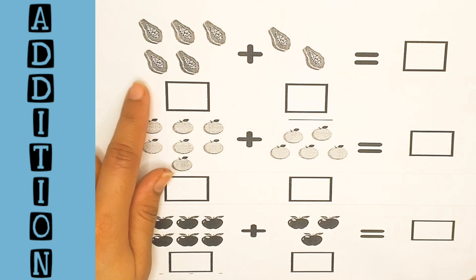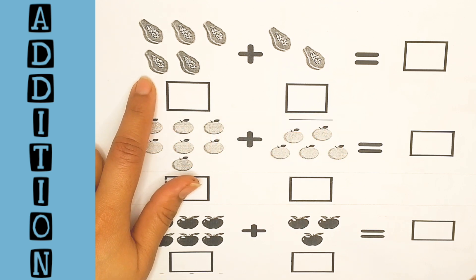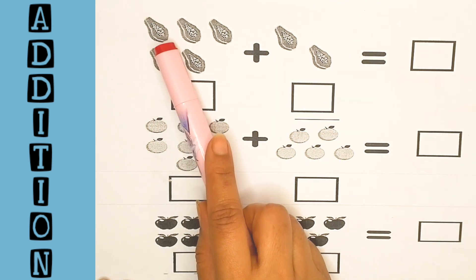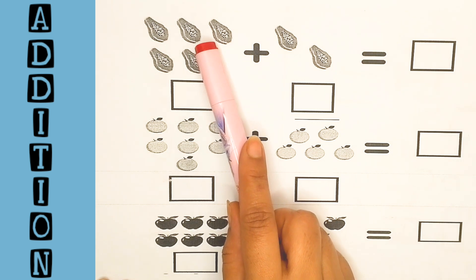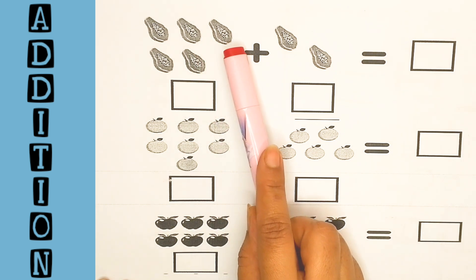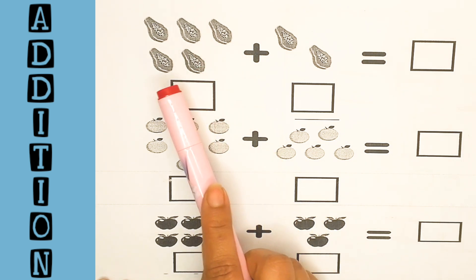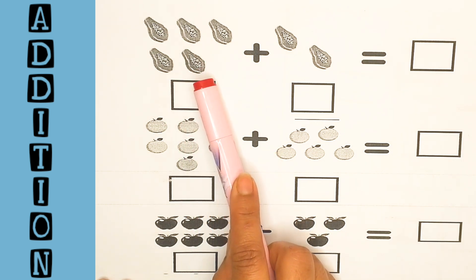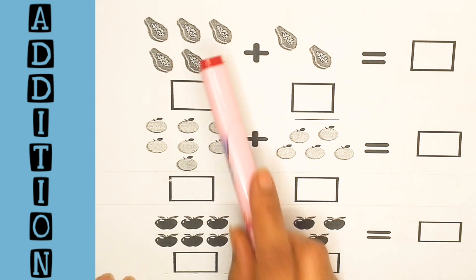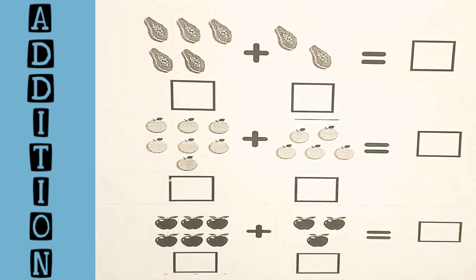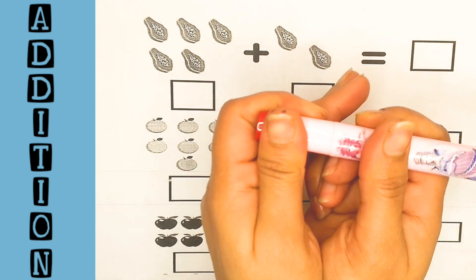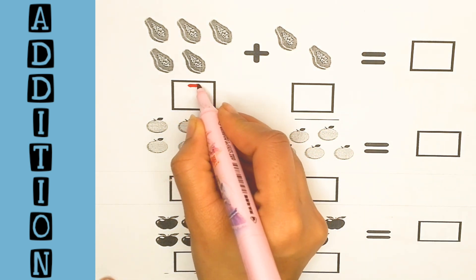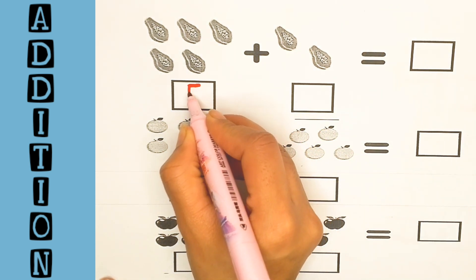Here are some pairs. Count them: one, two, three, four, five. Here are five pairs. Write the number five.